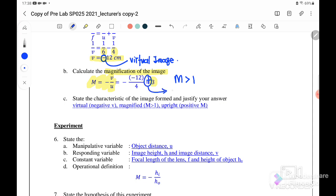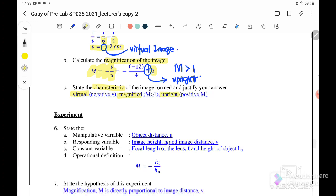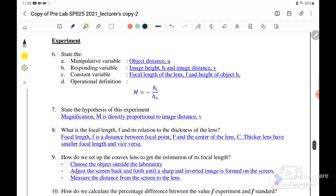Part c: state the characteristics of the image formed and justify your answer. As I mentioned just now, when v is negative, meaning that it's virtual. And when M is greater than one, it's actually magnified. And the value of M that you get is positive, meaning that it's upright. So the image formed is virtual, magnified, and upright.